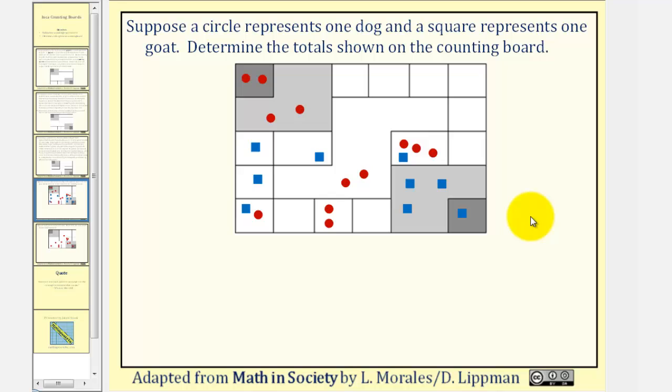Suppose a circle represents one dog and a square represents one goat. Determine the totals shown on the counting board. Let's begin by labeling the value of each compartment. Remember, the smallest compartments in the white region are worth one each, and there are a total of twelve of these compartments.